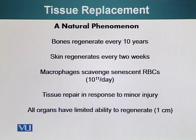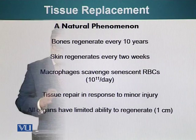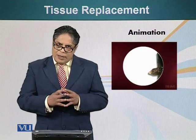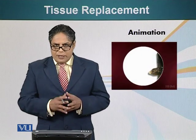People have a very limited ability to regenerate. But if we look at some other organisms, they have a remarkable ability to regenerate. For example, newts and salamanders can even regenerate a lost limb. I'd like to show you an animation which shows the process at a cellular level of how these creatures are able to regenerate their limb.